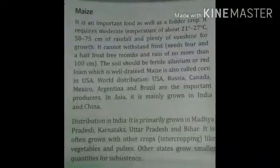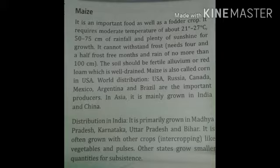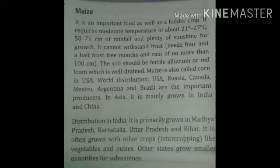Maize is an important food as well as fodder crop. It requires moderate temperature, about 21 to 27 degrees Celsius, and rainfall of 50 to 70 centimeters. Maize is also called corn in USA. World distribution of maize includes USA, Russia, Canada, Mexico, Argentina and Brazil. In India, it is primarily grown in Madhya Pradesh, Karnataka, Uttar Pradesh and Bihar.